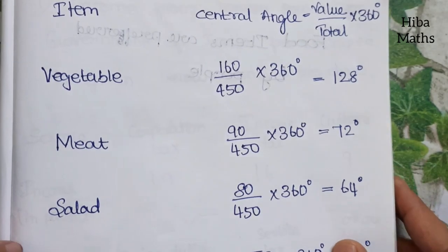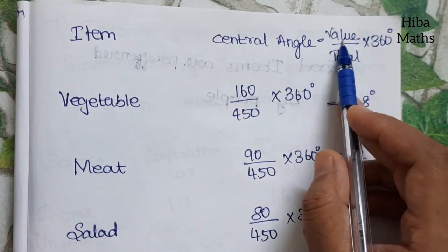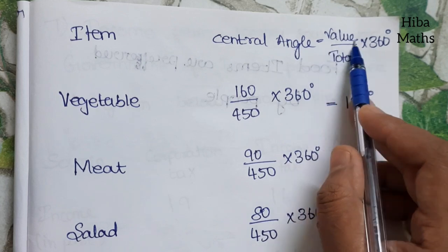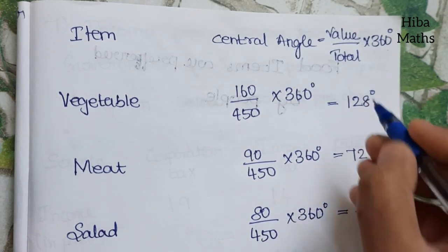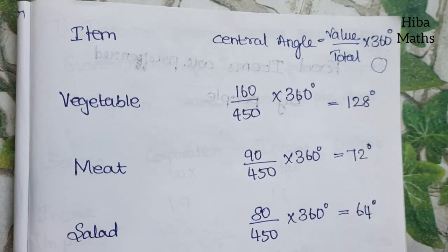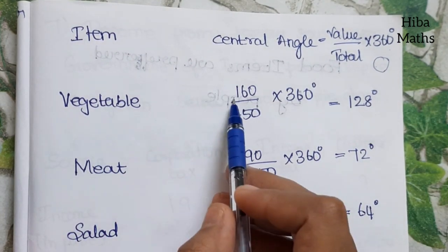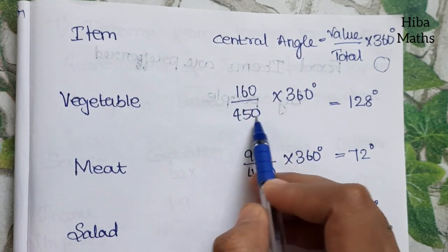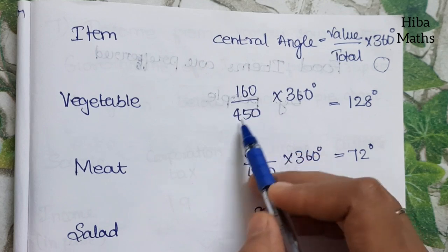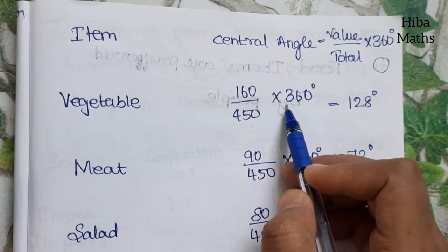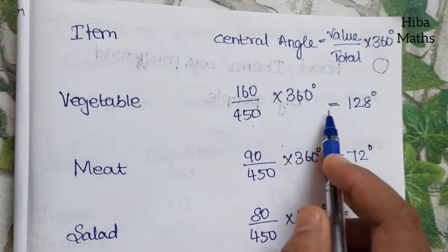To find the central angle for each item, use the formula: the value divided by the total value, multiplied by 360. Remember, 360 degrees is the full angle in a circle.